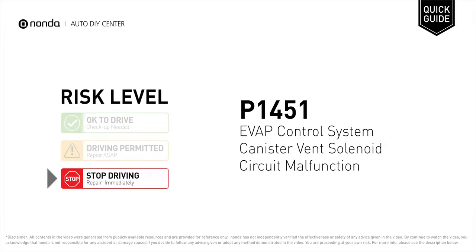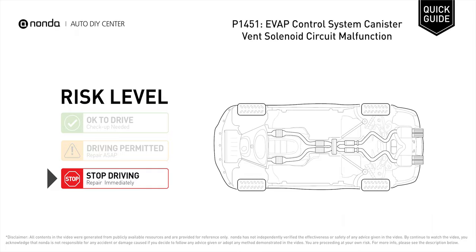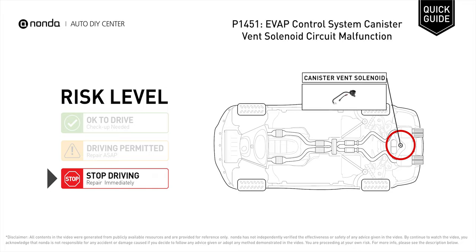P1451 is a diagnostic trouble code for EVAP control system canister vent solenoid circuit malfunction. Under this circumstance, stop driving and repair your vehicle immediately. It indicates that the PCM has detected an electrical failure within the canister vent solenoid circuit.